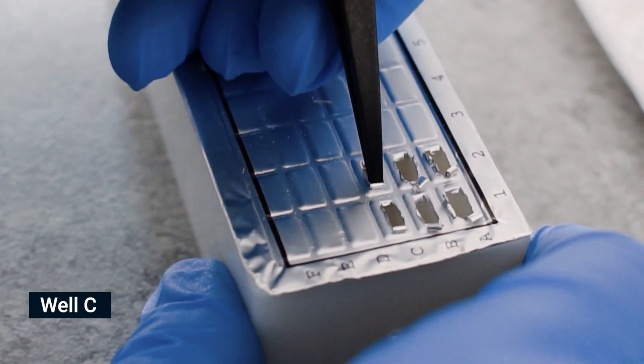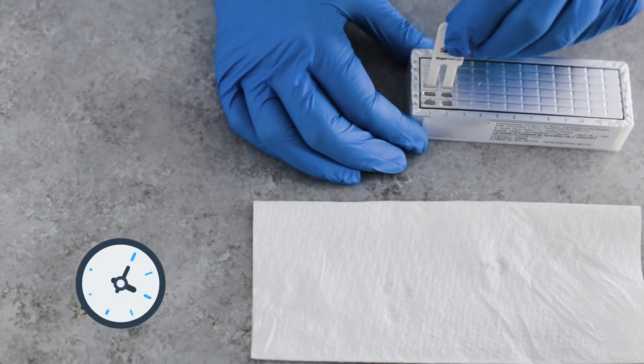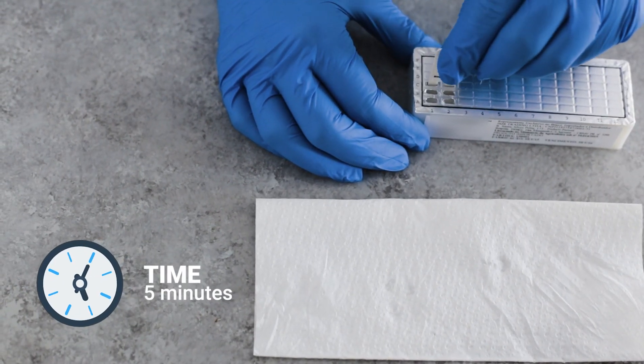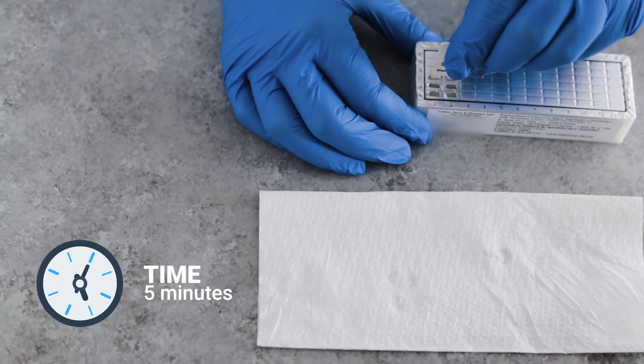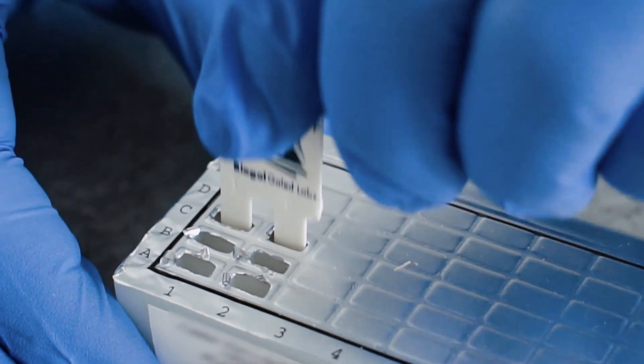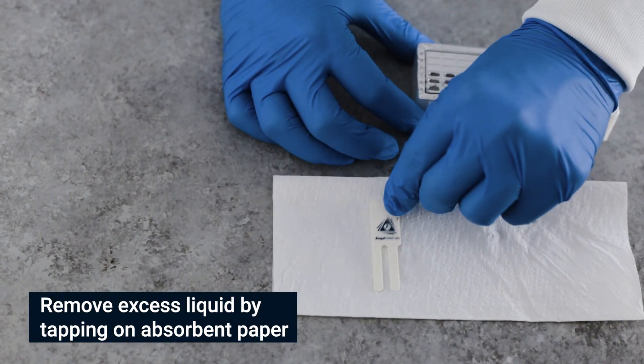Pierce the foil of the next wells in row C. Shake off excess liquid and insert the comb for 5 minutes. Move the teeth at least twice during this step, then remove excess liquid.